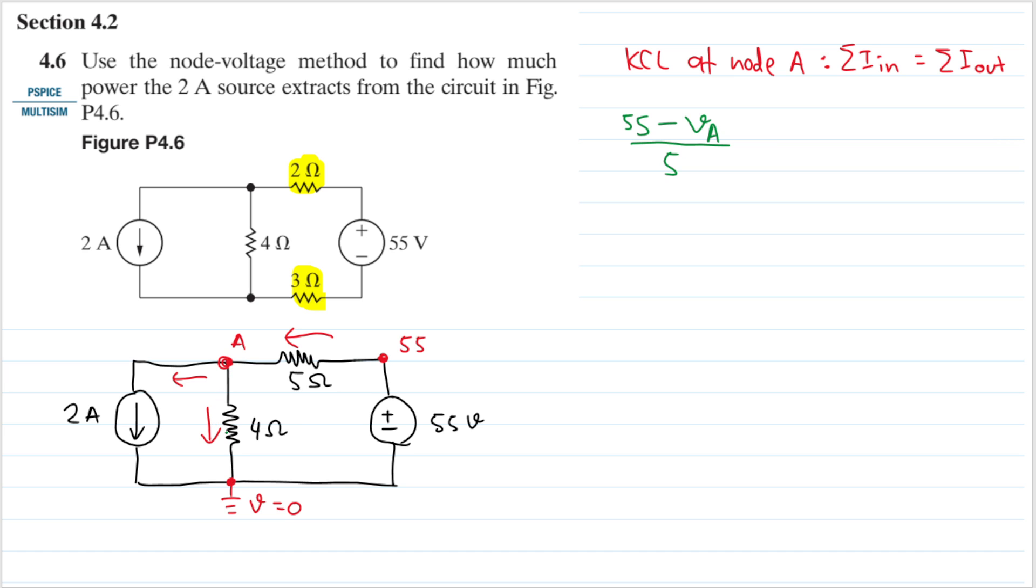The currents that go out: we will have VA minus the ground, so VA minus zero divided by 4 ohms. And then the other current that goes out is this 2 ampere, so I will have plus 2.